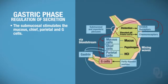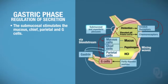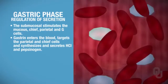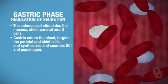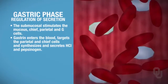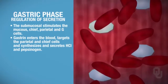The submucosal plexus stimulates mucus cells to synthesize and secrete mucus, chief cells to synthesize and secrete pepsinogen, parietal cells to synthesize and secrete hydrochloric acid, and G cells to synthesize and secrete gastrin. Gastrin is produced as a hormone by the stomach. Just like in the cephalic phase, gastrin enters the bloodstream and targets parietal cells and chief cells, leading to further synthesis and secretion of pepsinogen and HCl.